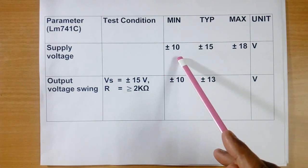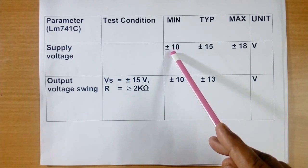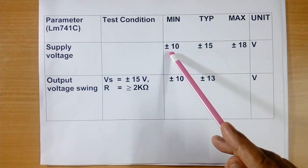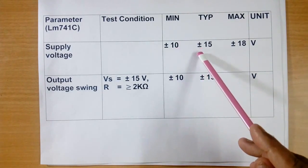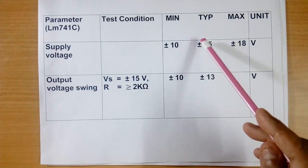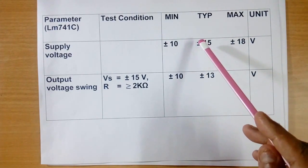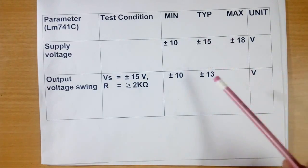But my experience is, even if you give less than plus minus 10 volt, IC still works. But there is no guarantee of working from supplier or manufacturer.